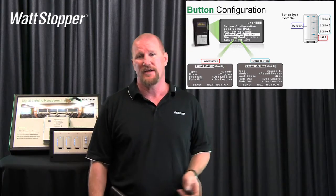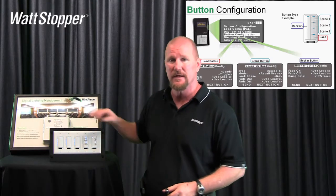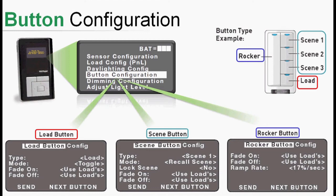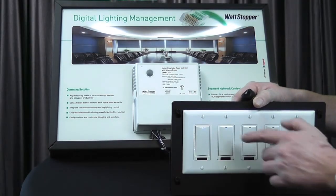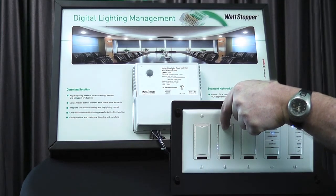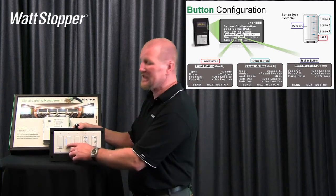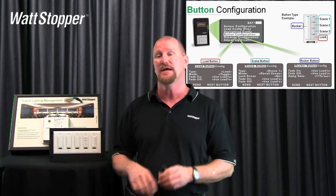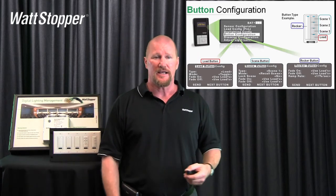You'll also see separate fade on and fade off times for scenes. The third button type is the rocker button — there's not a lot you can change. Rocker buttons are load buttons always meant to turn on and off loads, ramp up and ramp down loads. We give you separate fade on and fade off times, and a ramp rate. The ramp rate is expressed as 17% per second — we surveyed all the dimmers in the industry and found that pressing and holding a dimmer takes about six seconds to go from minimum to maximum, and 100 divided by 6 is roughly 17% per second. You can change it if you want — if you change it to 1% per second, it'll take 100 seconds to get to 100%. So that's button configuration.